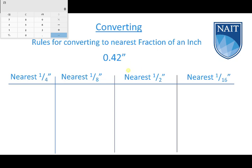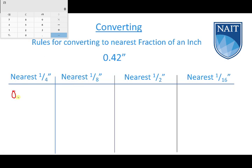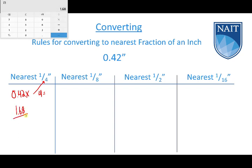The first thing we do is take that number, 0.42, and multiply it by the denominator of the fraction we're looking for. So we'll times it by 4. Using my calculator: 0.42 times 4 gives 1.68. I like to write it over the denominator — 1.68 over 4 — as a reminder that I need to round. We look one place to the right of the decimal: if that digit is 5 or higher, we round up; if it's 4 or lower, we round down.